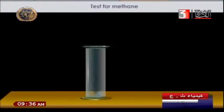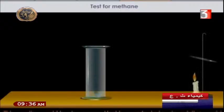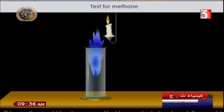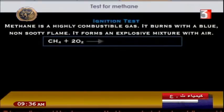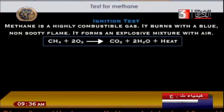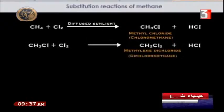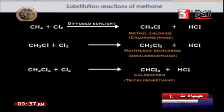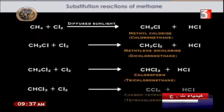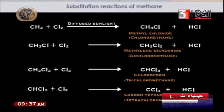When heated, sodium ethanoate plus NaOH (soda lime) gives sodium carbonate and methane gas. Methane can be tested by ignition — it burns because it is flammable. Methane with oxygen produces carbon dioxide, water vapor, and heat. Regarding the substitution reaction with chlorine: CH4 reacts with Cl2 to give CH3Cl, then CH2Cl2, then CHCl3 (chloroform), and finally CCl4 (carbon tetrachloride).